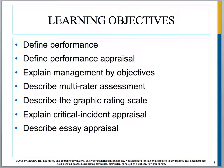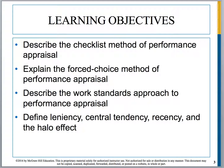There are various learning objectives for this chapter. By the time you're done reading it, you should be able to define performance and performance appraisal, explain MBO (management by objectives), describe multi-rater assessment and the graphic rating scale, explain critical incident appraisal, describe an essay appraisal and the checklist method, explain the forced choice method, describe the work standards approach, and define leniency, central tendency, recency, and the halo effect.